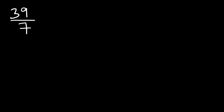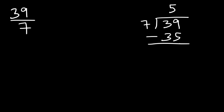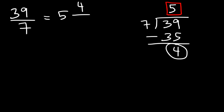Now let's look at the second example: thirty-nine over seven, and convert it to a mixed number. Using long division, how many times does seven go into thirty-nine? Seven goes into thirty-nine five times; seven times five is thirty-five, and thirty-nine minus thirty-five is four. So the whole number of the mixed number is five, with a remainder of four and the same denominator.